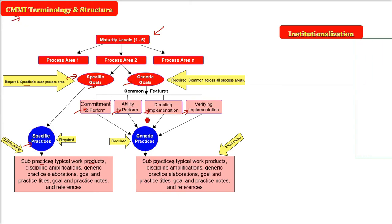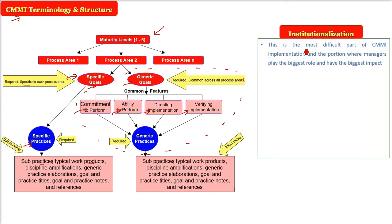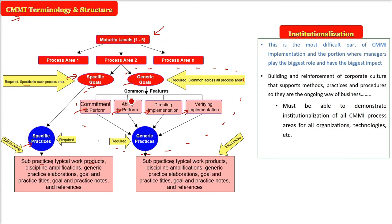Putting all of these practices and processes into an organization or company is called institutionalization. This is the most difficult part of CMMI implementation because managers play the biggest role here — they must implement CMMI through building and reinforcement of the corporate culture that supports methods, practices, and procedures. The ongoing way of business must demonstrate institutionalization of all CMMI process areas across the entire organization.